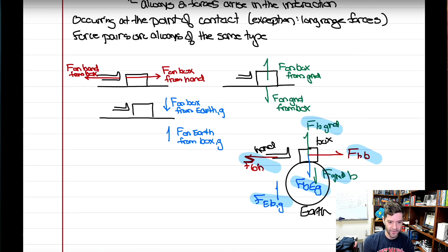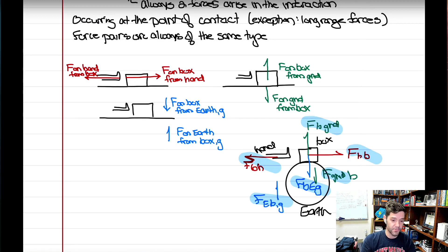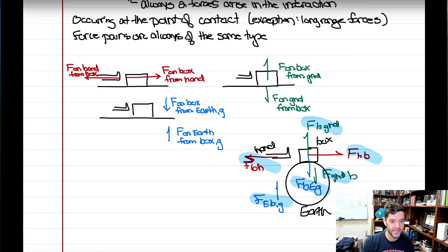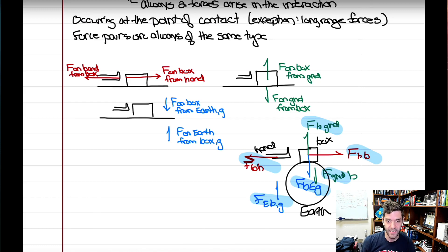Newton's third law defines the origin of how forces arise. If you take this approach — ask what is touching, identify pairs of forces at each contact, then add gravity — it allows you to correctly identify all forces acting on a particular object. If you're studying the box, you identify everything touching the box to get the complete picture.